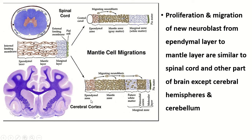In the cerebral cortex and cerebellum, the migration process is slightly different. Newly formed neuroblasts initially form the mantle layer and marginal layer, but the migration of neuroblasts is not confined to the mantle layer — they progressively move externally and are placed in the marginal layer. Most neuroblasts are placed within the marginal zone, forming the gray matter of the cerebrum and cerebellum. Few neuroblasts remain in the mantle layer, forming the basal nuclei of the cerebrum and nuclei of the cerebellum.